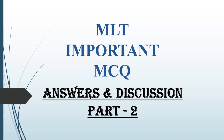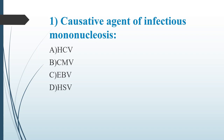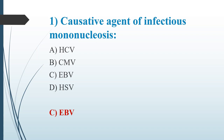First question: Causative agent of infectious mononucleosis. Option A: HCV. Option B: CMV. Option C: EBV. Option D: HSV. The answer is Option C, EBV — Epstein-Barr virus, which causes infectious mononucleosis.